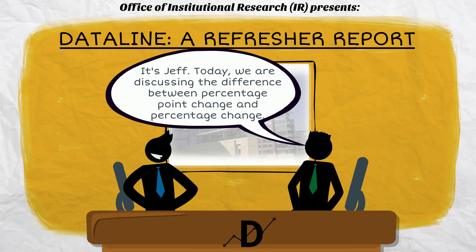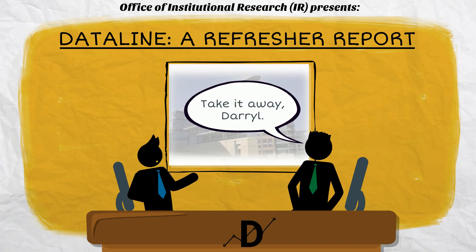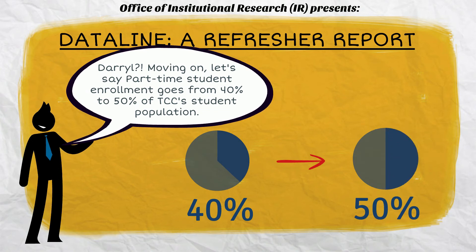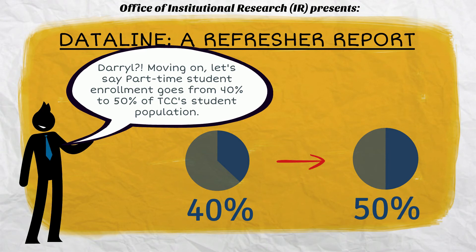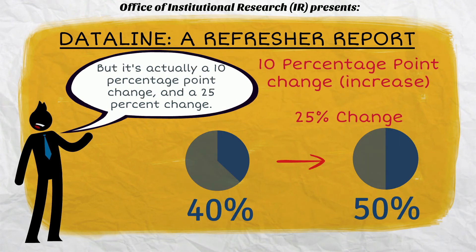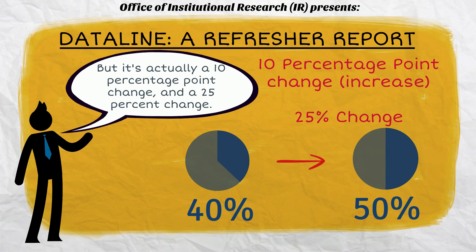Jeff. Today we are discussing the difference between percentage point change and percentage change. Take it away, Daryl. Moving on. Let's say part-time student enrollment goes from 40% to 50% of TCC's student population. Many people will call this a 10% change. But it's actually a 10 percentage point change and a 25% change.